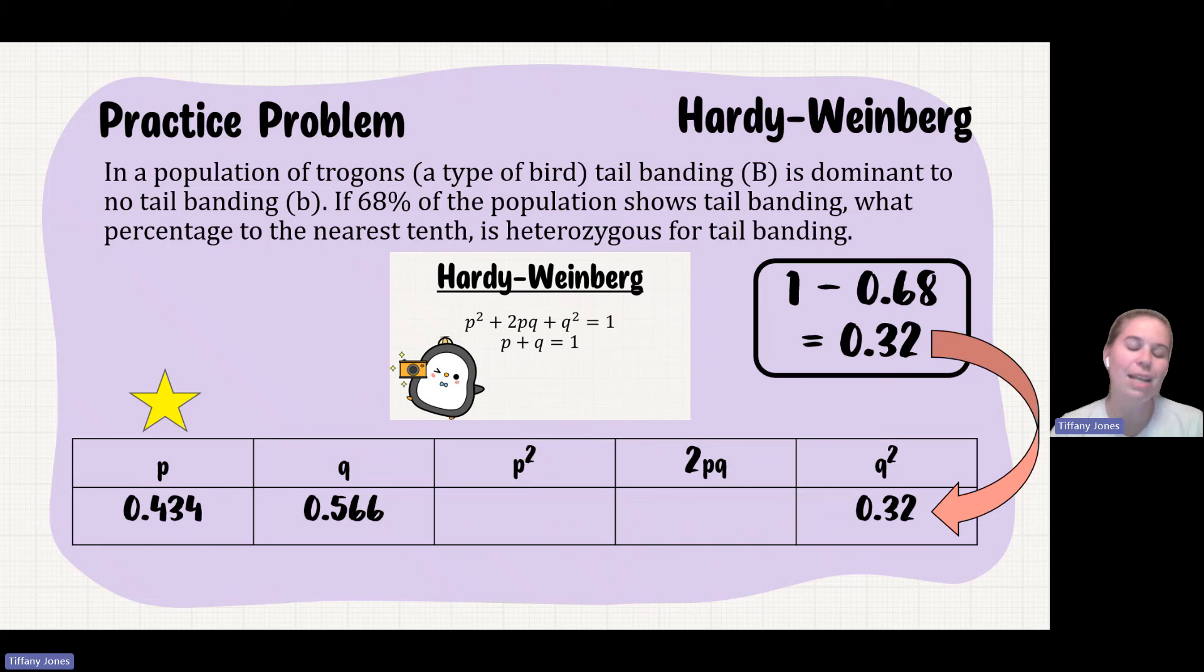Once I have P, I can solve for P². So I say 0.434² gives me my P², which is 0.188. And then to solve for 2PQ, I multiply 2 times P times Q, which is 2 times 0.434 times 0.566, which gives me 0.491.